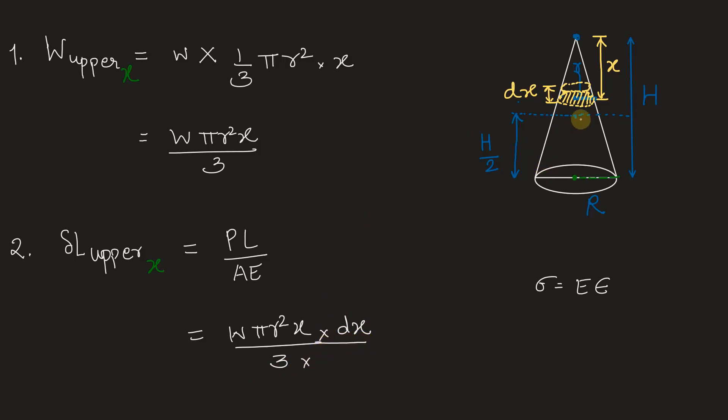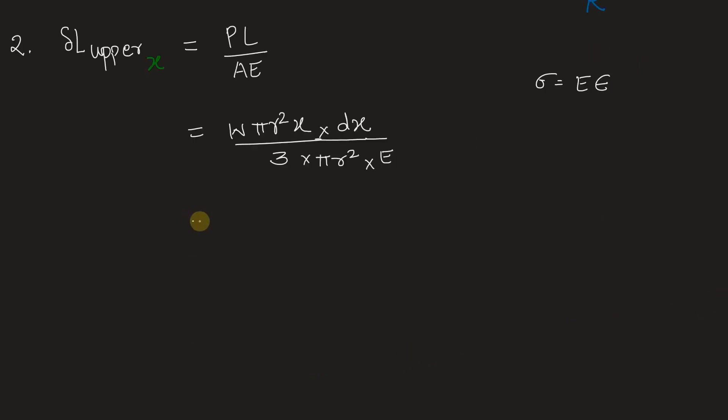the area of cross-section, which is nothing but π r². And E is nothing but Young's modulus, which is a constant value. Let's simplify this. So we have W x dx / 3E.